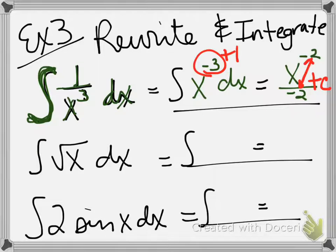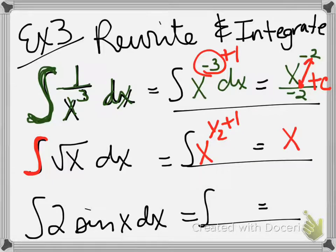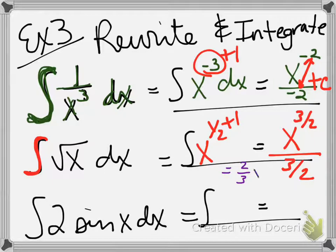For the next one, I'm going to integrate the square root of x. First I'm going to rewrite the square root of x as x to the 1 half power. Then I'm going to follow my rule: add 1 to my exponent. So 1 half plus 1 is 3 halves. And now I'm going to divide by 3 halves. When you divide by a fraction, I can flip it over and make it 2 thirds x to the 3 halves power, plus c. All of your general solutions have got to have a plus c.